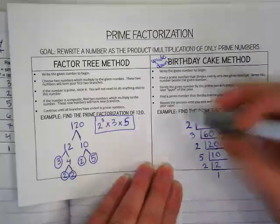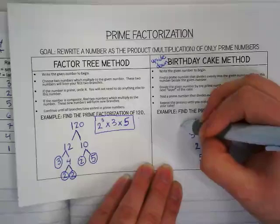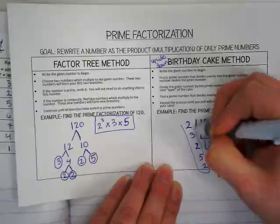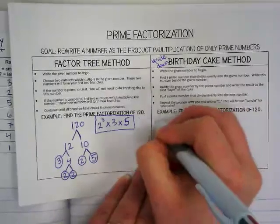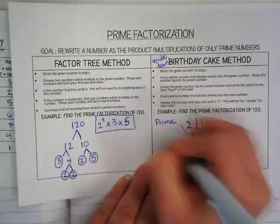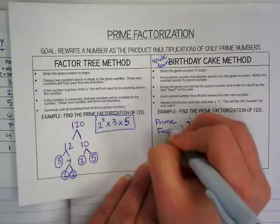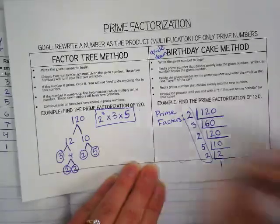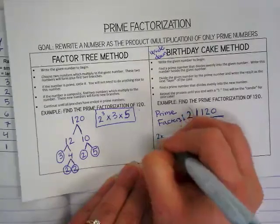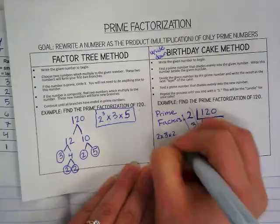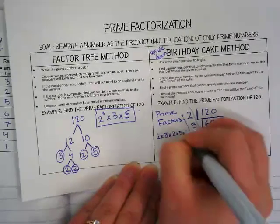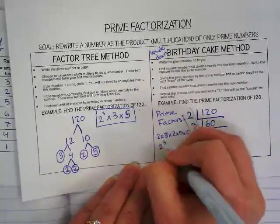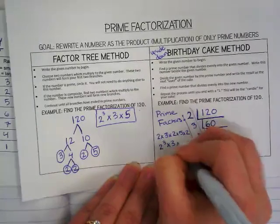All of my factors are prime, and they're all listed right here. These are my prime factors. So I would get 2 times 3 times 2 times 5 times 2, or 2 to the third power times 3 times 5.